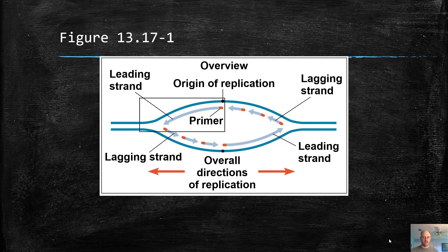So if there is a G on the parental or template strand, then a C would be added by DNA polymerase. We build a new DNA strand in the direction of 5 to 3, and it's following helicase as the helicase is unzipping the DNA.